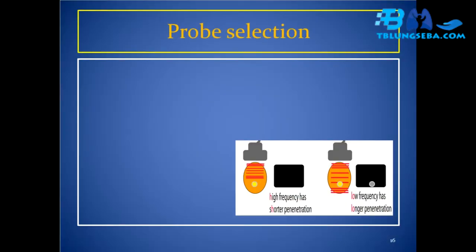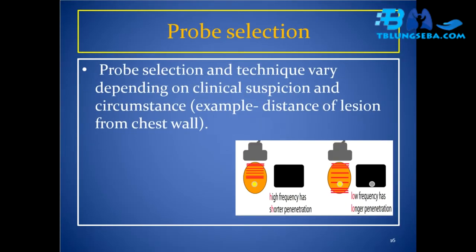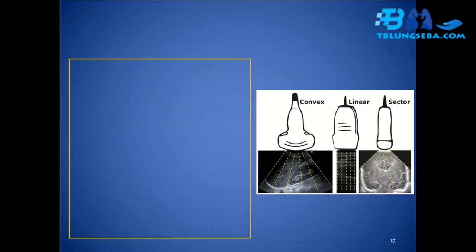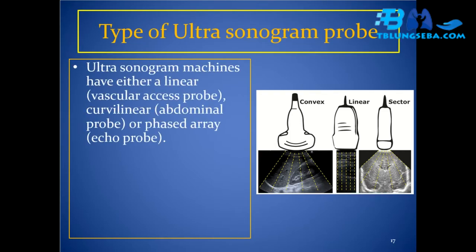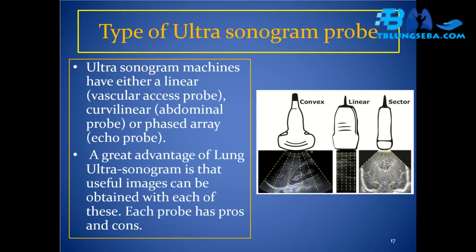Probe selection and technique vary depending on clinical suspicion and circumstance, for example the distance of the lesion from the chest wall. Ultrasonogram machines have either a linear vascular access probe, curvilinear abdominal probe, or phased array echo probe. A great advantage of lung ultrasonogram is that useful images can be obtained with each of these probes, though each has pros and cons.